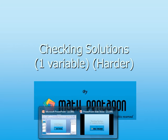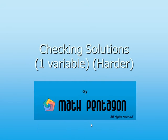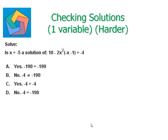Hi and welcome. Today we're going to learn about checking solutions in equations with one variable. The first example: is x equals negative 5 a solution of 10 minus 2x² times open bracket negative x minus 1 close bracket equals negative 4?